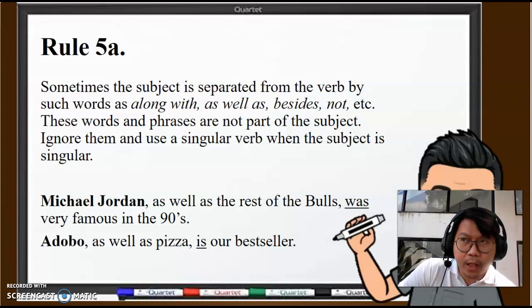But when it's "as well as," "along with," or "besides," the subject does not become plural. If we said, for example, "Michael Jordan and the rest of the Bulls," we would use "were." Michael Jordan and the rest of the Bulls were very famous in the 90s. But when it's "as well as," we retain the singular form of the subject.